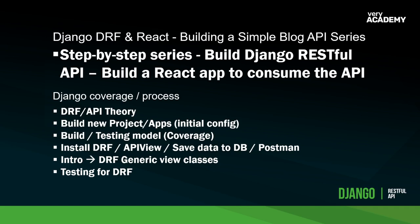Once that's in place, we'll install the Django REST Framework package and look at API View, which will allow us to visualize and test basic elements of our API. We'll go through creating, saving, and visualizing data, and I'll introduce you to Postman. We'll also cover DRF generic view classes and do some testing.